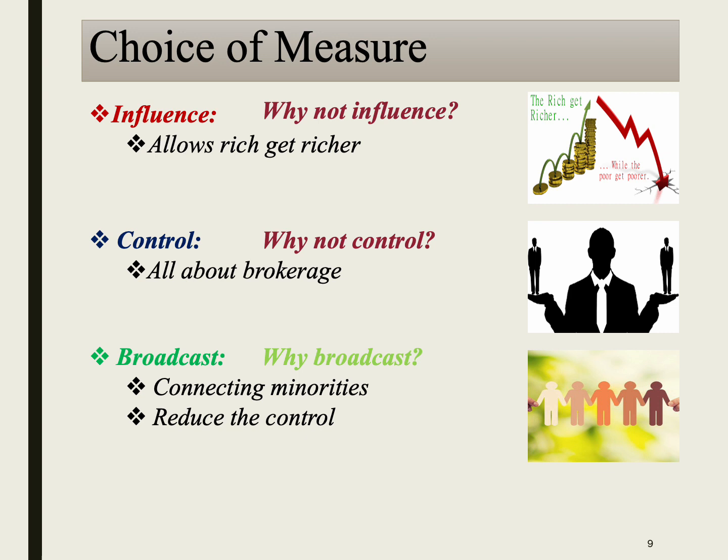Optimizing for the influence measure tends to reinforce advantages for well-positioned nodes, resulting in a rich-get-richer phenomenon where those who already have advantages gain even more control and influence, potentially worsening the existing advantage gap. Optimizing for the control measure focuses on the brokerage ability of nodes to act as intermediaries; however, our concern is reducing the control of nodes, not increasing it. In contrast, prioritizing broadcast objectives can promote connectivity among disadvantaged nodes, enabling mutual support and access to information while mitigating the increasing dominance of the majority.